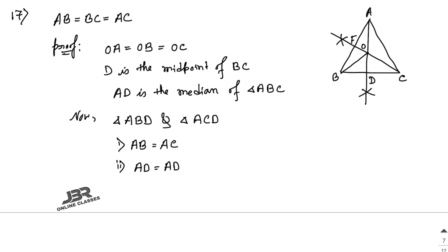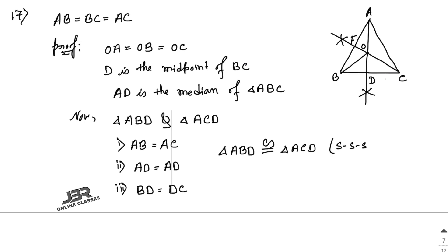Second, AD is the common side, so AD equals AD. Third, BD equals DC as D is the midpoint of BC. Therefore triangle ABD is congruent with triangle ACD by SSS rule. By CPCT, angle ADB equals angle ADC.